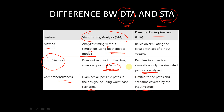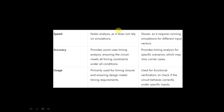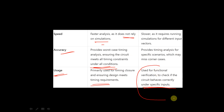Regarding speed: STA is faster as it does not rely on simulation, whereas DTA is slower because it requires running simulations for different input vectors. For accuracy, STA provides worst-case timing analysis ensuring the circuit meets all timing constraints under all conditions. For usage, STA is primarily used for timing closure, while DTA is used for functional verification to check if the circuit behaves correctly under specific inputs.